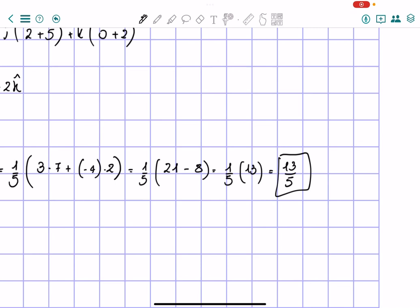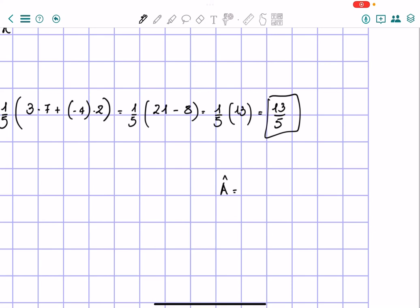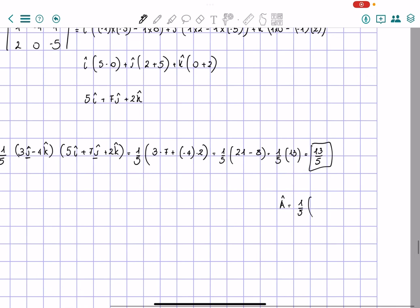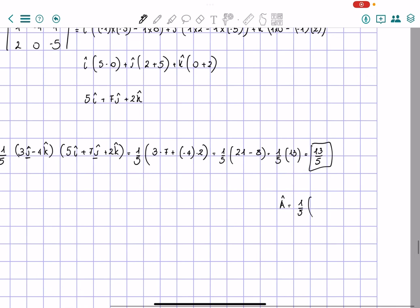And of course, the direction is given to us by the vector a hat, which is going to be, as we said before, 1 over 5 times 3j minus 4k. So, this is the magnitude, and this is the direction.